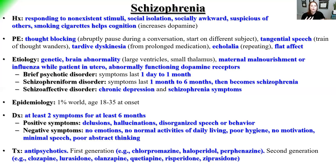Schizophrenia is relatively rare, with symptoms typically appearing in the late teens to early twenties. Diagnostic criteria: at least two symptoms for at least six months. Positive symptoms (things they are doing): delusions, hallucinations, disorganized speech or behavior. Negative symptoms (things they are not doing): no emotional expression, failure to perform activities of daily living like brushing teeth, poor hygiene, no motivation, minimal speech, and poor abstract thinking.